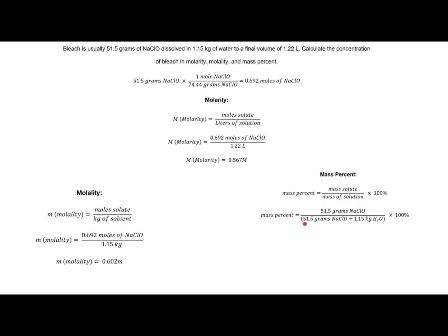Finally, for mass percent: my solute is 51.5 grams of sodium hypochlorite. For the mass of solution I need solute plus solvent, but I have grams and kilograms, so I convert 1.15 kilograms to grams. Adding these together, I get a mass percent of 4.29%. The key to doing concentration problems is keeping straight what is the solute, what is the solvent, and what is the solution. Most household solutions use percent by volume or percent by mass — see how many you can find this week.